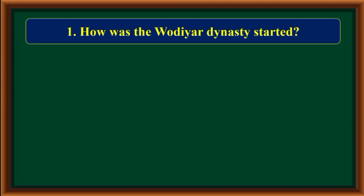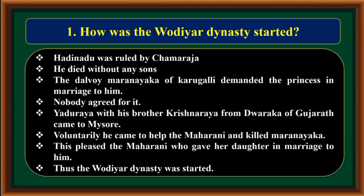How was the Vadiyar dynasty started? Hadinadu was ruled by Chamaraja. He died without any sons. The Dalwai, Maranayaka of Karugalli, demanded the princess in marriage to him. Nobody agreed for it.